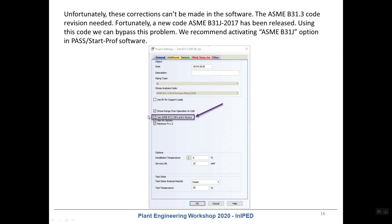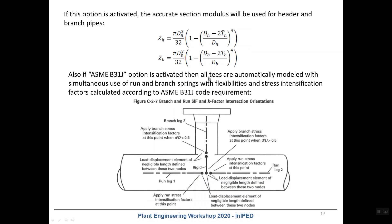It is very easy — you just need to select this option in PASS StarProf project settings. After that, StarProf will automatically take into account the stress intensification factors according to ASME B31-J, and will use the accurate real section moduli for the header and for the branch. StarProf will also automatically convert all T-connections in your model to a more accurate model with a rigid element of length equal to half the diameter of the header, and will automatically add flexibilities on the branch and on the header.